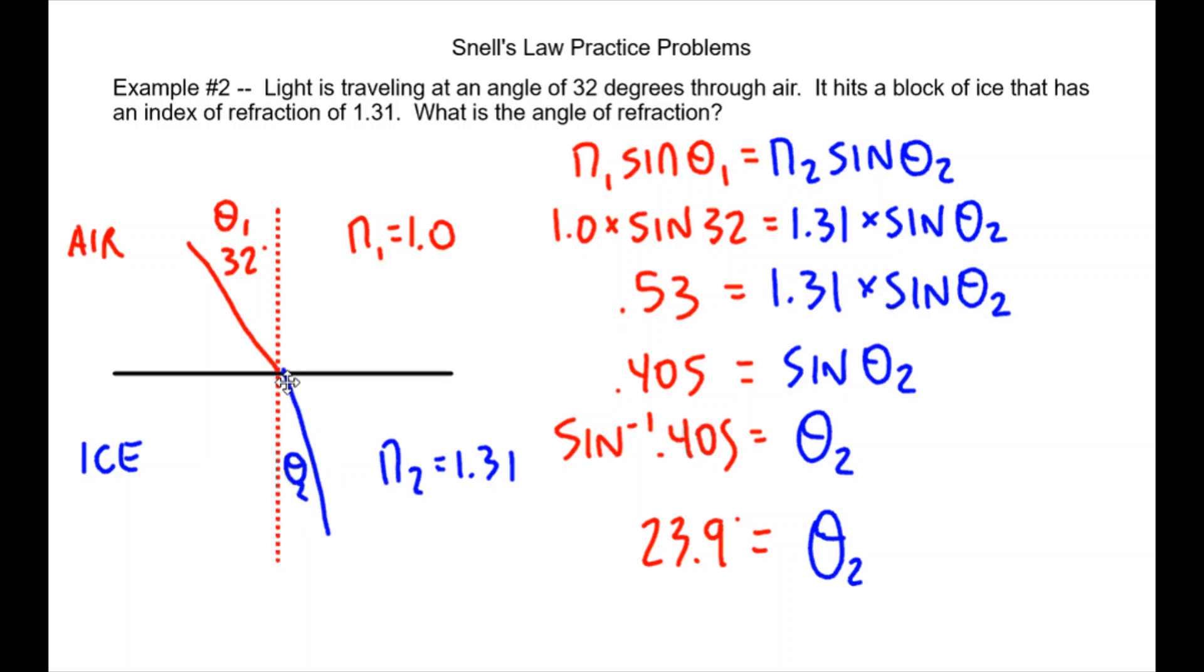And then you get 23.9 degrees is angle 2. Again it gets bent towards the normal as it goes into a more dense material. All right that's it. Thanks for checking all these practice problems.